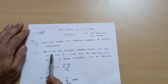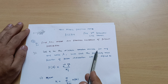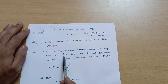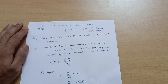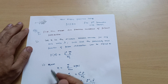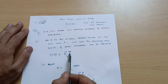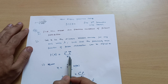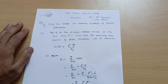First, let's start with the assumption: let x be the discrete random variable. For any real value lambda, the probability mass function of Poisson's distribution is defined as P(x) = e^(−λ) · λ^x / x!. This is the probability formula for Poisson's distribution, which we have already used to solve problems.